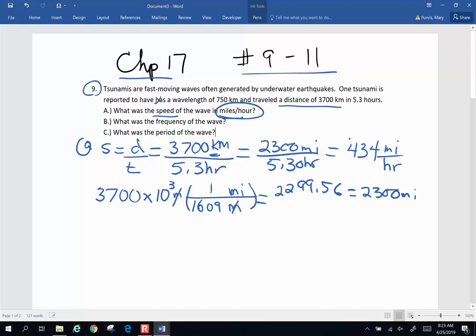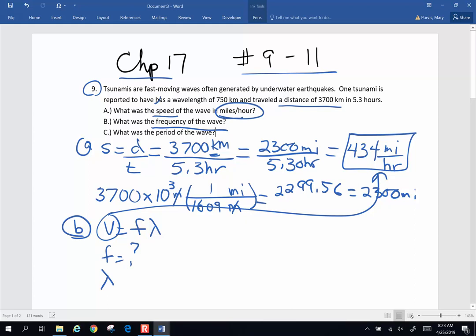Part B. What is the frequency of the wave? We have a frequency. We know velocity is frequency times wavelength. We now know the velocity of the wave. We know that from up here. That's the speed of my wave. So frequency is my unknown.